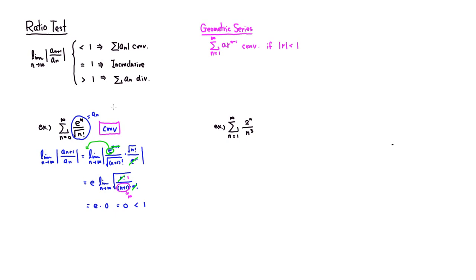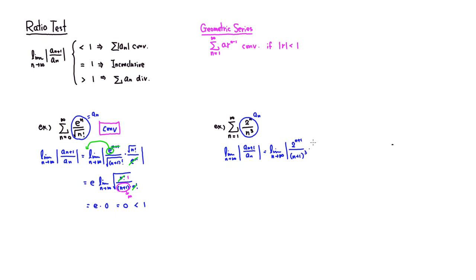Let's look at another example: summation n goes from 1 to infinity of 2^n over n^3. This is going to be our a_n. We're going to take the limit as n approaches infinity of the absolute value of a_{n+1} over a_n. So a_{n+1} would be 2^{n+1} over (n+1)^3. Dividing by a_n, I take the reciprocal, so we have n^3 on top and 2^n on the bottom.